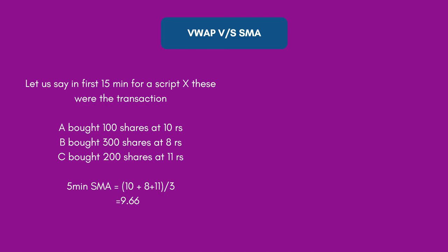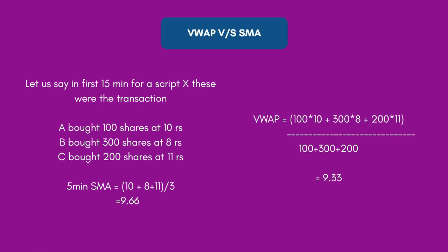When calculating VWAP, we consider that B bought the most shares — 300 shares at ₹8 — so that price should carry more weight. VWAP = (100×10 + 300×8 + 200×11) / (100 + 300 + 200) = 9.33. So while SMA gives an average price of ₹9.66, introducing volume brings the actual weighted average price down to ₹9.33.